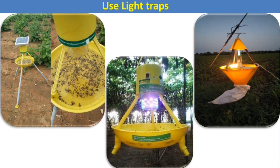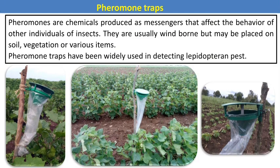These are some of the light traps we can use in our fields for surveillance of insect pests. Nowadays the solar trap is also mostly used. The next trap is the pheromone trap. Pheromones are chemicals involved in insect communication — that is, semiochemicals. Pheromones are chemical messengers that affect the behavior of other individuals of the same species. They are usually airborne but may be placed on soil, vegetation, or various items. Pheromone traps have been widely used in detecting Lepidopteran pests mostly.